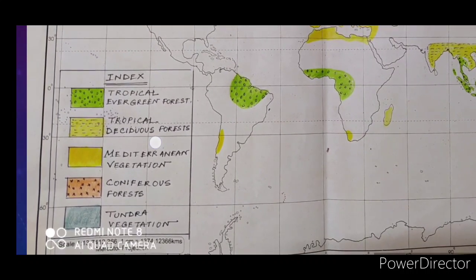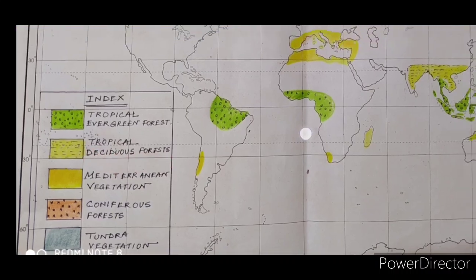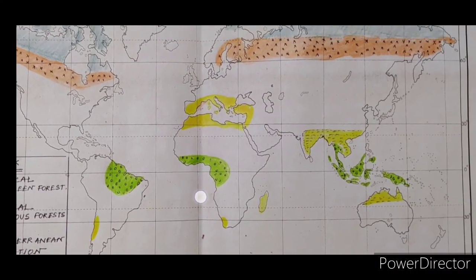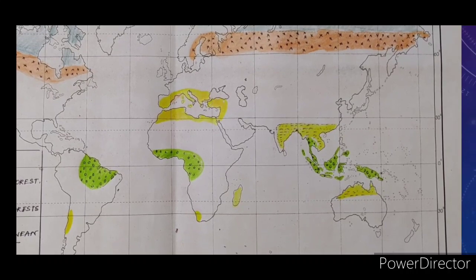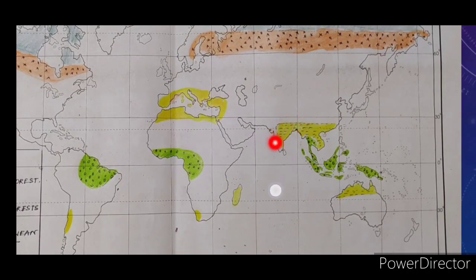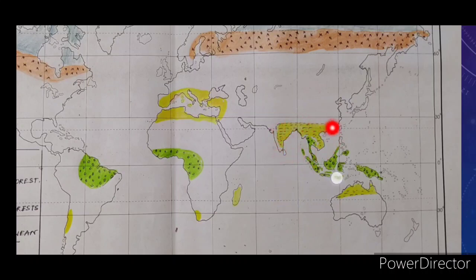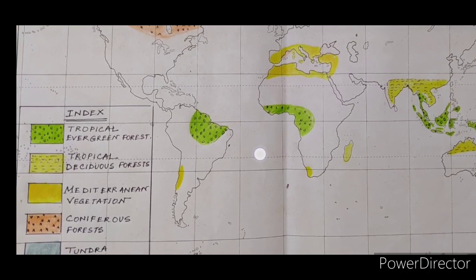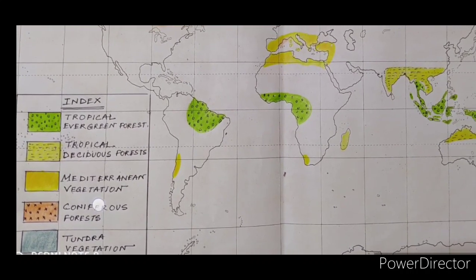Next is the tropical deciduous forest. It is mainly found in India and South Asian countries like Myanmar, which are located on the same latitudes as India. You can also find the tropical deciduous forest on the northern half of Australia. In yellow color with broken dotted lines, I have marked it on the map.